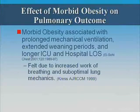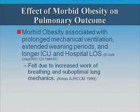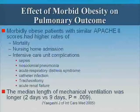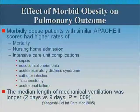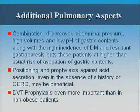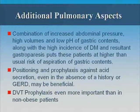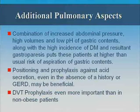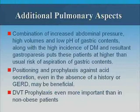Morbid obesity is associated as an independent predictor of prolonged mechanical ventilation, extended weaning periods, longer ICU time, and longer hospital length of stay, although some studies have been equivocal. Morbid obesity patients with similar Apache 2 scores have higher rates of mortality, nursing home admission, and ICU complications with longer stays. A combination of increased abdominal pressure, high gastric volumes, low pH of gastric contents, high incidence of diabetes, and gastroparesis puts these patients at higher risk for aspiration. DVT prophylaxis is also more important than in non-obese patients.